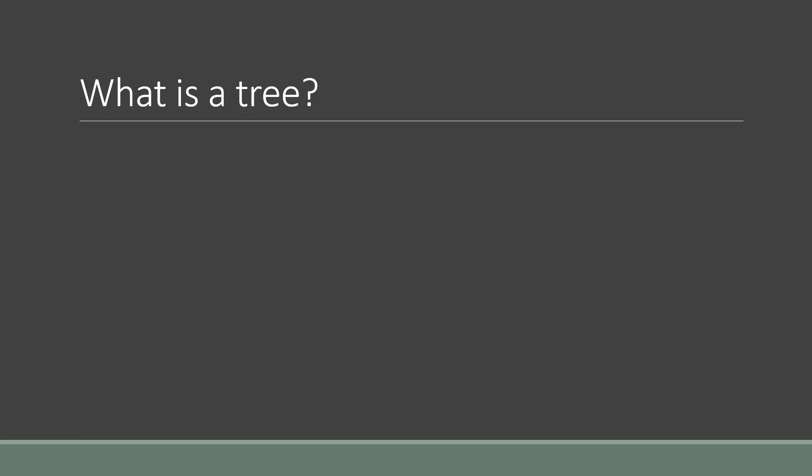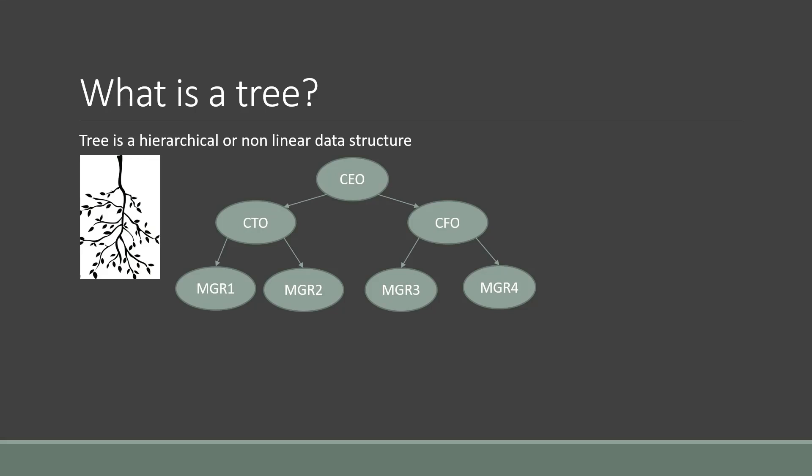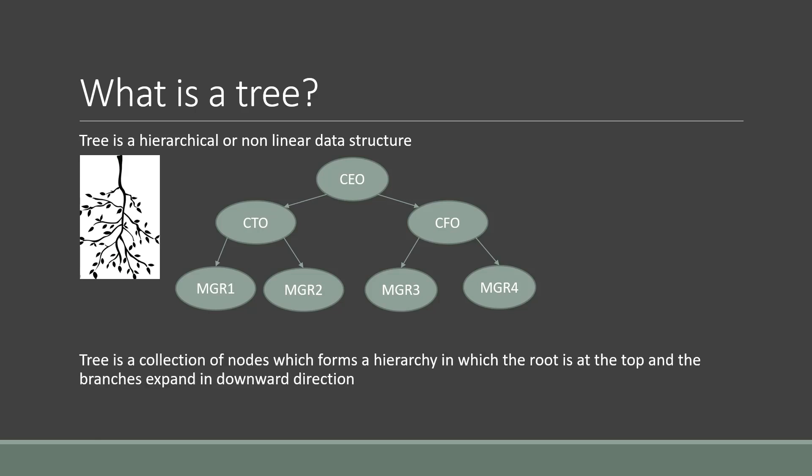A tree is a hierarchical or non-linear data structure. If you invert a real tree, it becomes a tree in data structures. For example, in an organization hierarchy, the CEO is at the top — called the root or boss — and the CTO and CFO are direct reportees to the CEO. Manager 1 and Manager 2 report to the CTO; Manager 3 and Manager 4 report to the CFO. A tree is a collection of nodes which forms a hierarchy, with the root at the top and branches expanding downward.